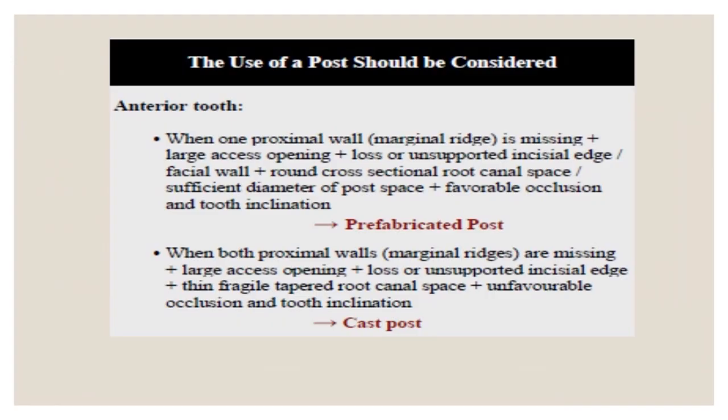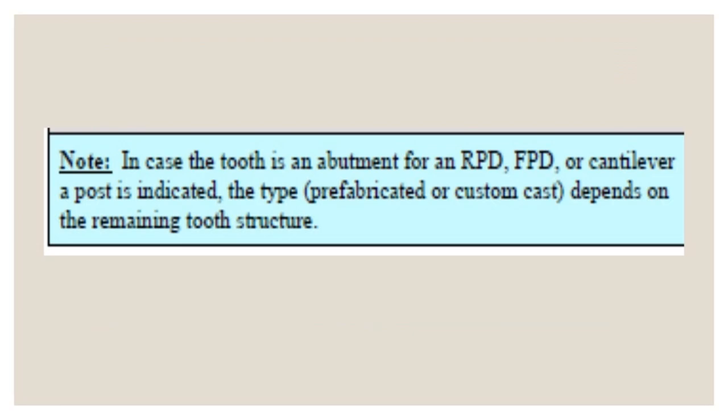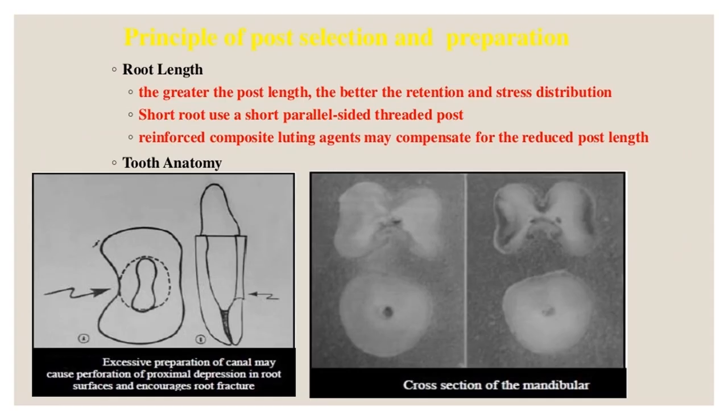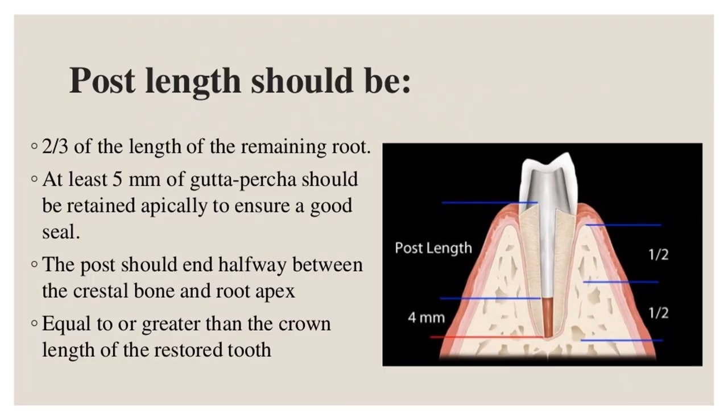Root length: the greater the post length, the better the retention and stress distribution. For short roots, use a short parallel-sided threaded post; reinforced composite luting agents may compensate for reduced post length. Post length should be two-thirds of the length of the remaining root.